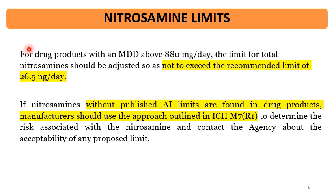If Nitrosamines without published AI limits are found in drug products, manufacturers should use the approach outlined in ICH M7 R1 to determine the associated risk and contact the agency about the acceptability of the proposed limit. So if a completely new Nitrosamine impurity type is found that is not published anywhere, the ICH M7 guideline can be taken into consideration for deciding the limit.